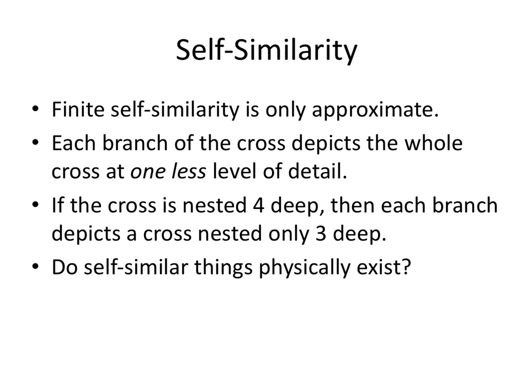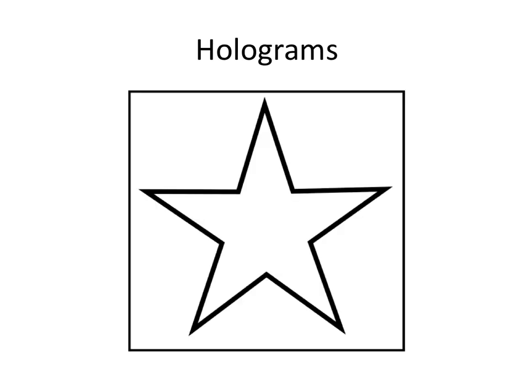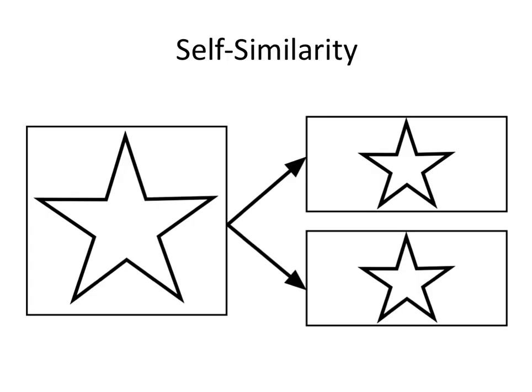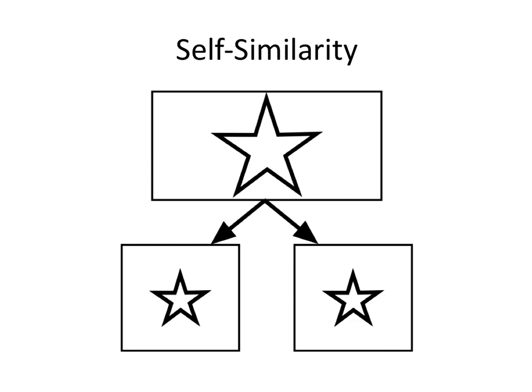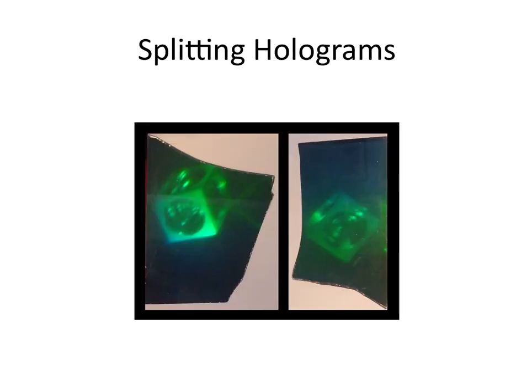Do self-similar things like this physically exist, or are they just abstractions? Well, there are holograms. Holograms have self-similarity. If we made a hologram with a star, then when we cut the hologram in half, remarkably the whole image of the star will appear in each half. The entire image of the star is encoded in every part of the hologram. Likewise, if we cut that half into half again — now we have quarters — we'll have the entire image of the star reproduced again in each of those quarter parts. And you can actually see this: this was a hologram of a little cubicle thing that was broken in half, and you can see that each part is repeated.